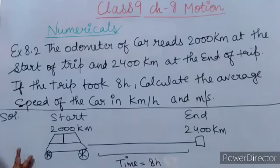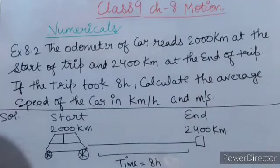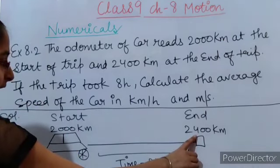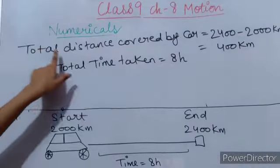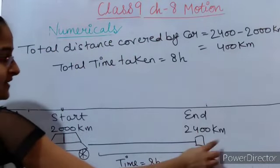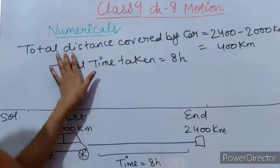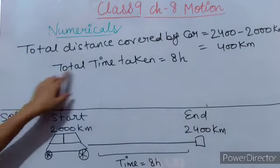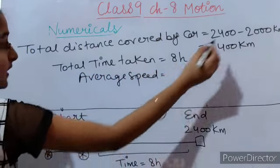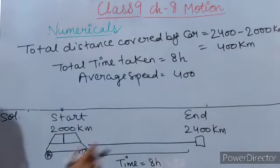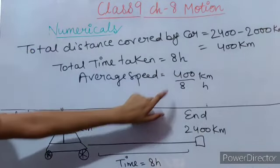First, we find the average speed of the car: total distance travelled divided by total time taken. Total distance covered by the car equals the final odometer reading minus the starting reading: 2400 km minus 2000 km equals 400 km. Total time taken is 8 hours. So average speed equals 400 divided by 8, which gives 50 km per hour.